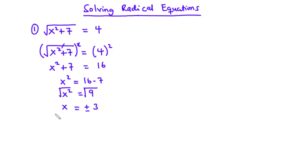Now after finding the values of x, we need to check if all the solutions satisfy the original equation, or if we have extraneous solutions. Extraneous solutions are solutions that emerge from the process of solving the problem; however, they are not valid solutions because after substituting those values into the original equation, you realize they do not satisfy it.